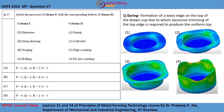When the sheet is subjected to deep drawing, we can see at the final stage the topmost edges are wavy and not uniform, as shown in this figure. The excess metal on the top edge has to be cut off to get a uniform edge. So earring is a deep drawing defect.